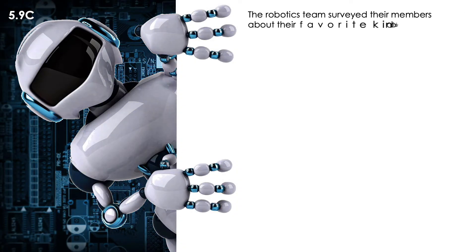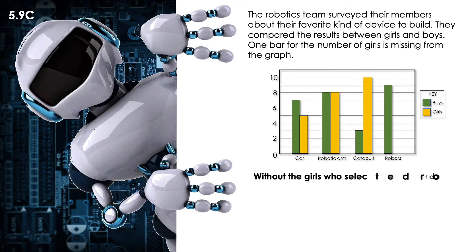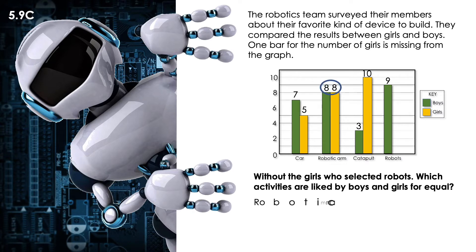We're going to be using the same word problem for each of the scenarios. We're just going to be changing each of the questions. So first question: Without the girls who selected the robots, which activities are liked by boys and girls for equal? First, I'm going to put the numbers on the top of my bars so I can analyze the information easily. Which activity do the boys and girls like for equal? Yes, robotic arms.